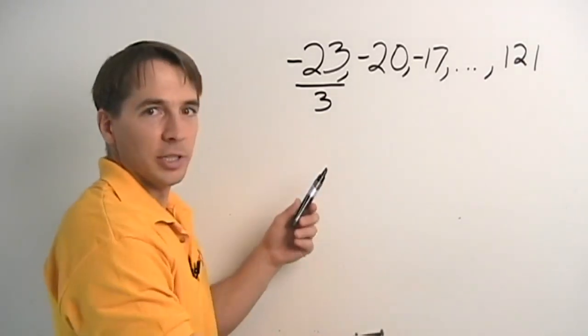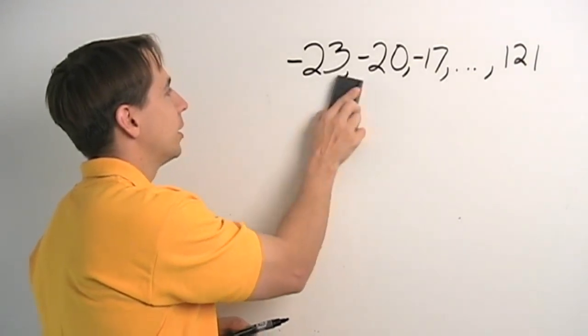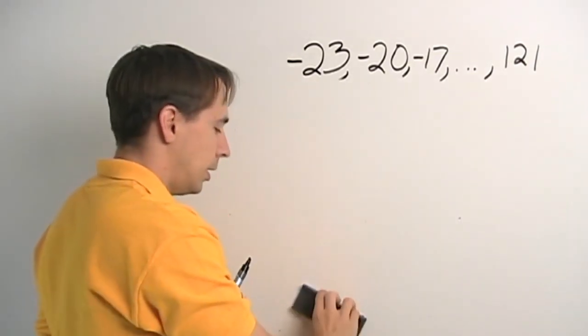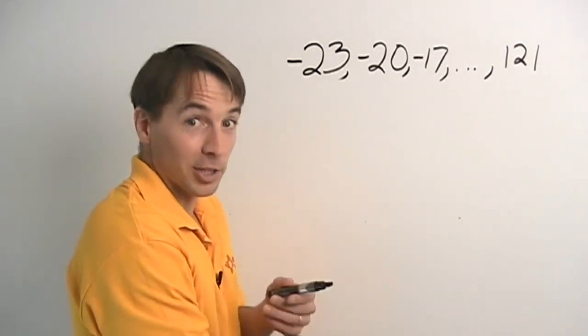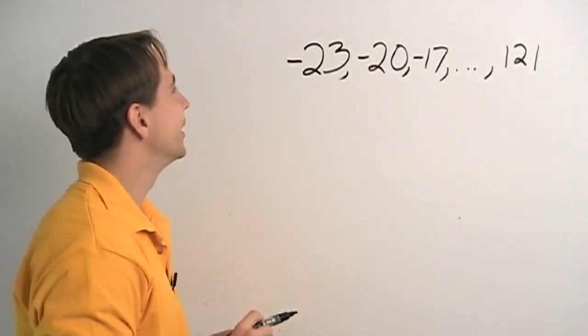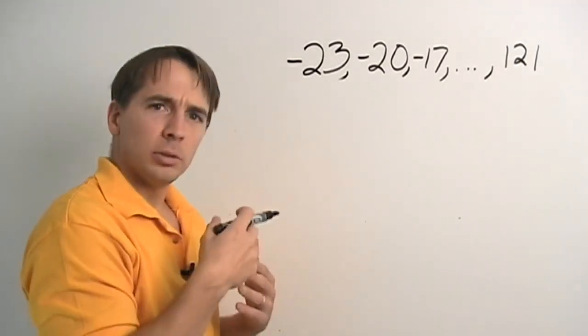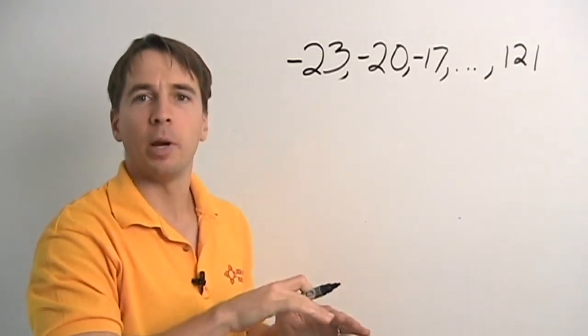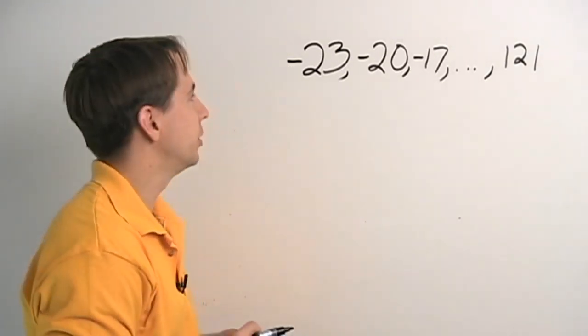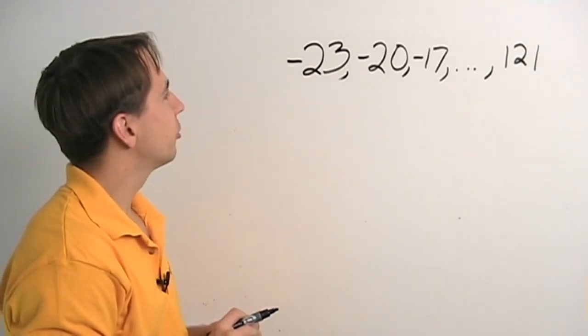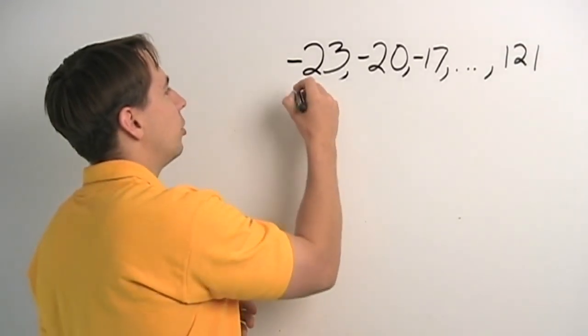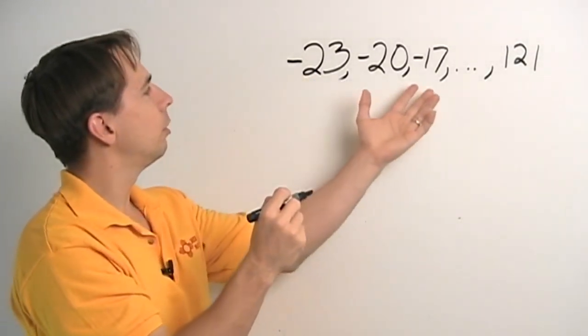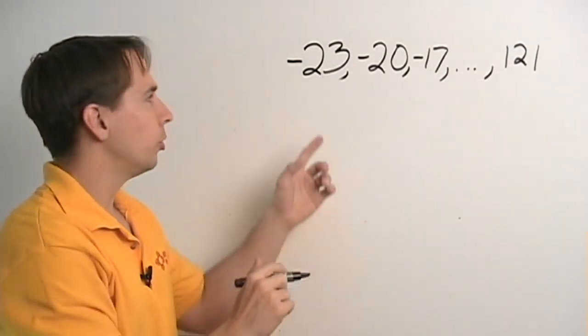So, before we start dealing with all these yucky fractions, let's step back and think about it again and see if there's a way we can avoid fractions. Because we like avoiding fractions. That's good. So, when we were taking steps of 4, all the numbers were multiples of 4. So, when we divided by 4, everything came out nice and even. We were able to deal with it. So, here, our first step, well, maybe we just turn them all into multiples of 3.